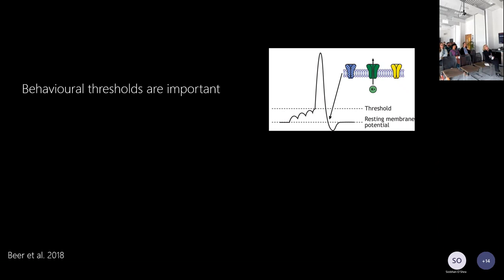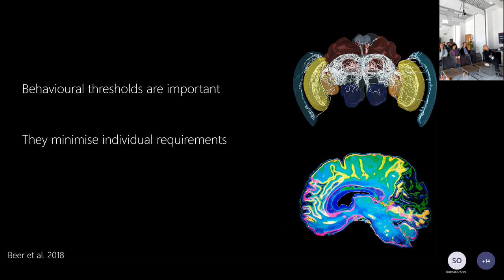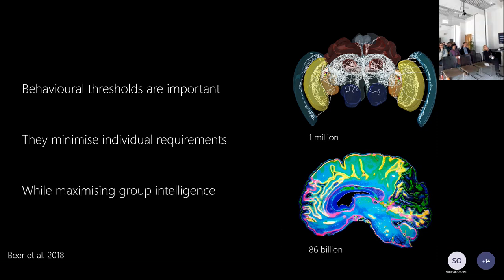This is really important for insects because it minimises the cognitive requirements of decision-making at the individual level — important because they only have very simple brains. That's a one-million-neuron brain of a bee, which is actually large by social insect standards. In contrast, a human brain has 86 billion neurons. So making things simple at the individual level is important, but at the same time they maximise group intelligence by being flexible and robust to changes.